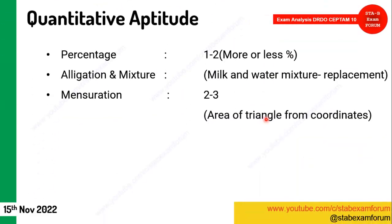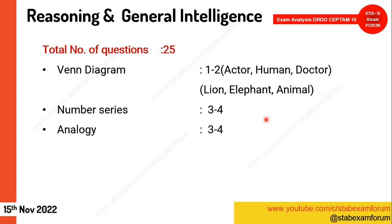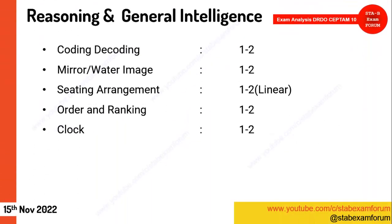This is a similar pattern to the previous day with not much change. For reasoning, there were 25 questions. Questions included: draw the Venn diagram for actor, human, doctor, lion, elephant, animal. Students preparing for admin allied should check our two chapters on Venn diagrams. Also analogy, number series, blood relationships, and direction sense tests appeared — similar to previous days.